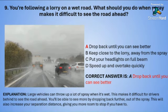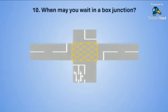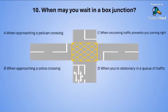Question ten: When may you wait in a box junction like the one in the photo? A: when approaching a pelican crossing. B: when approaching a zebra crossing. C: when oncoming traffic prevents you turning right. Or D: when you are stationary in a queue of traffic.